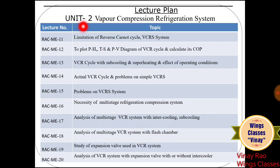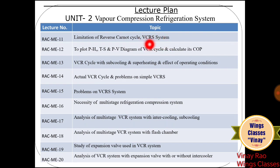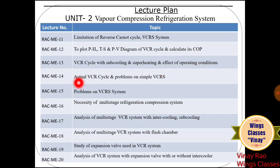Unit 2 is the Vapor Compression Refrigeration System, which is the most important unit. It builds on basic concepts from properties of pure substances from thermodynamics. Lecture 11 covers the limitation of the Reverse Carnot Cycle and the VCR system. Lecture 12 covers plotting P-H, T-S, and P-V diagrams for VCRS and calculating its COP. Lecture 13 covers the VCR cycle with sub-cooling and superheating and the effects of operating conditions.